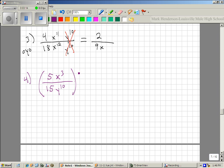And then, we're going to square that. So, here I get 5 squared. I get x to the 3 times 2. I get 15 squared. And I get y to the 10 times 2. So, here I get 25 x to the 6th times 225 y to the 20.